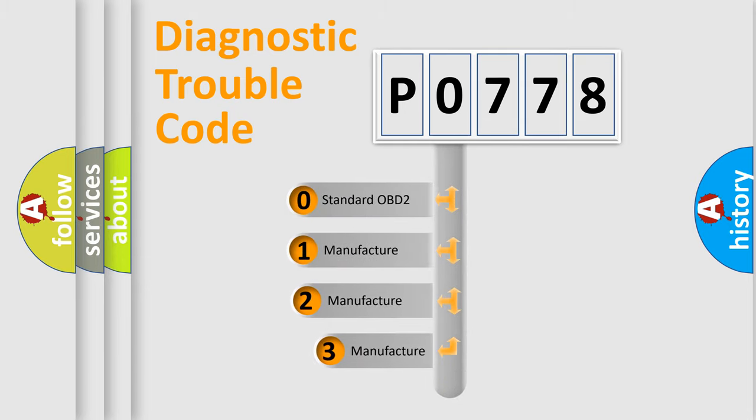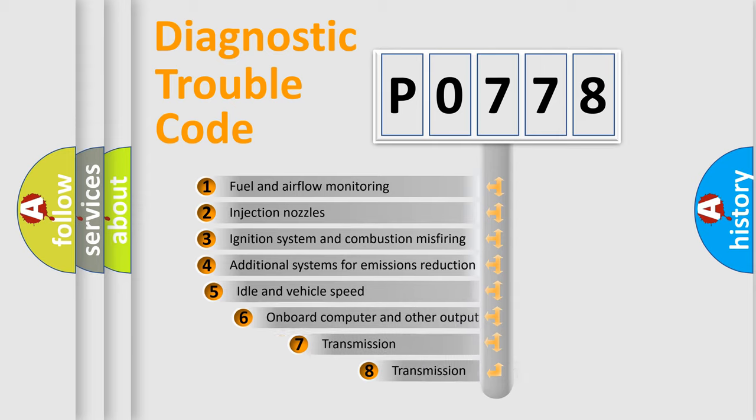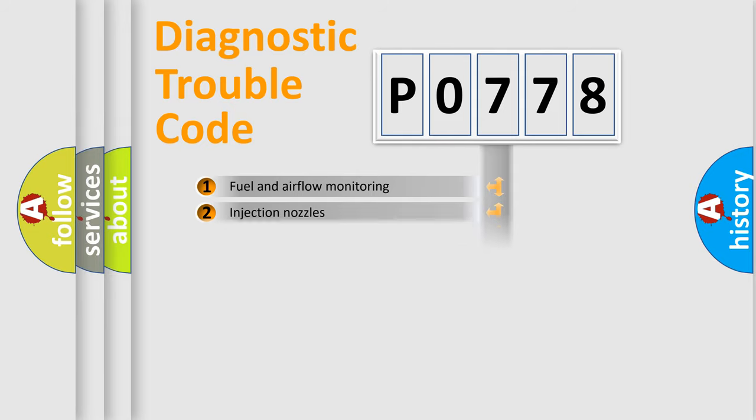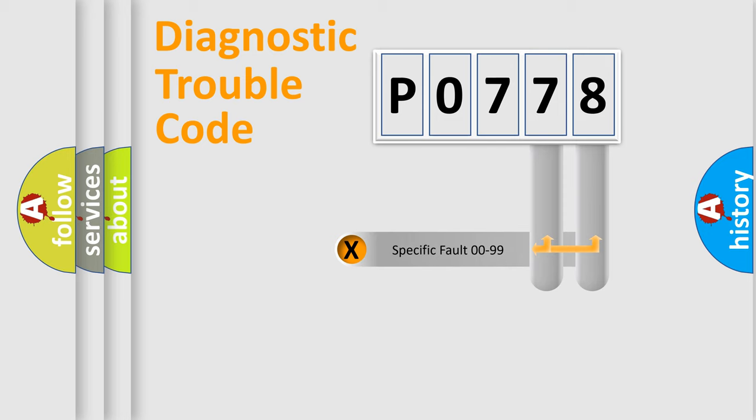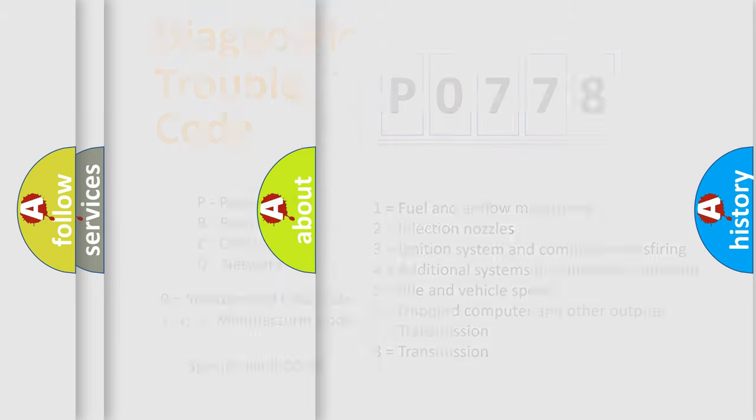If the second character is expressed as zero, it is a standardized error. In the case of numbers 1, 2, or 3, it is a more prestigious expression of the car-specific error. The third character specifies a subset of errors. The distribution shown is valid only for the standardized DTC code. Only the last two characters define the specific fault of the group. Let's not forget that such a division is valid only if the second character code is expressed by the number zero.